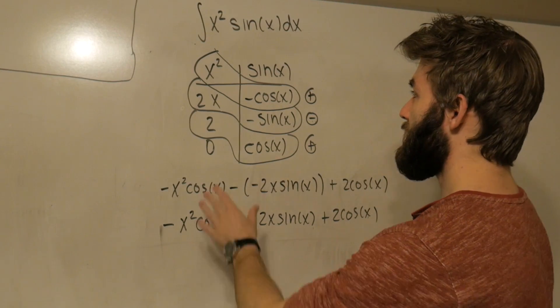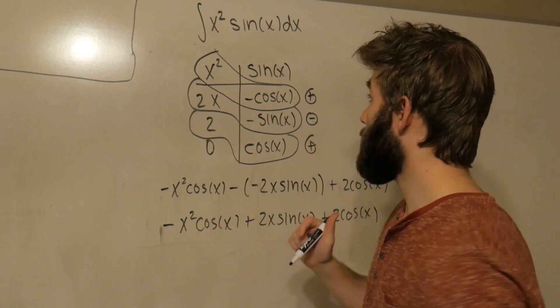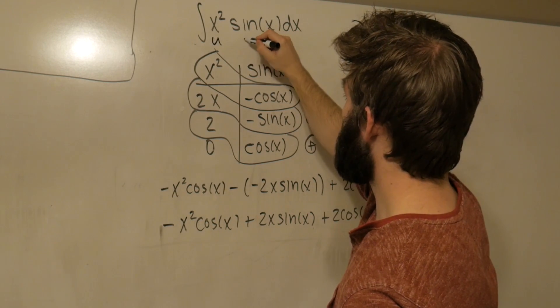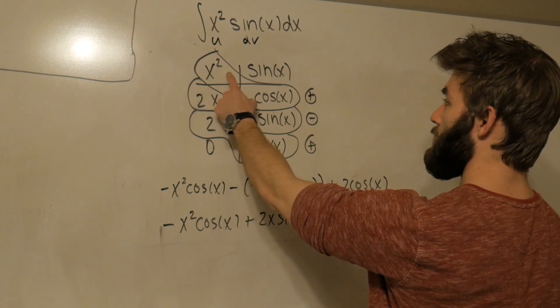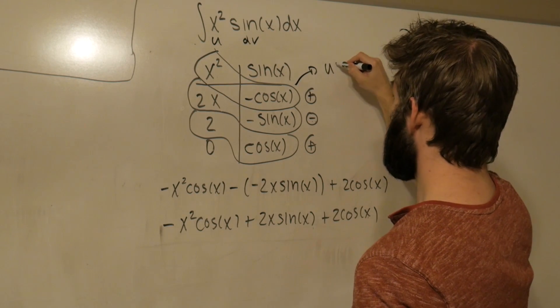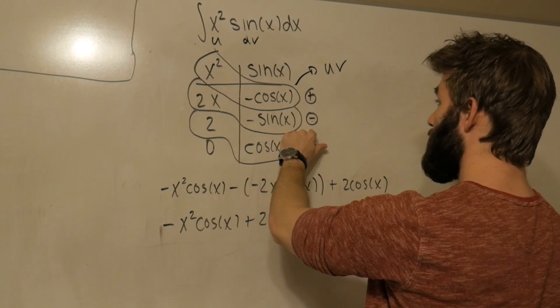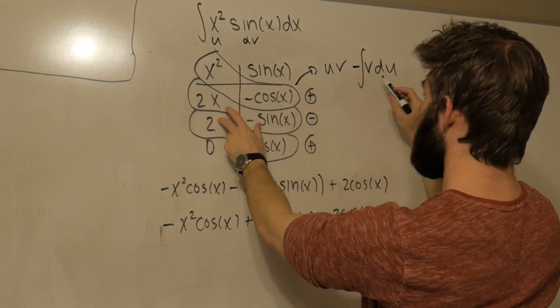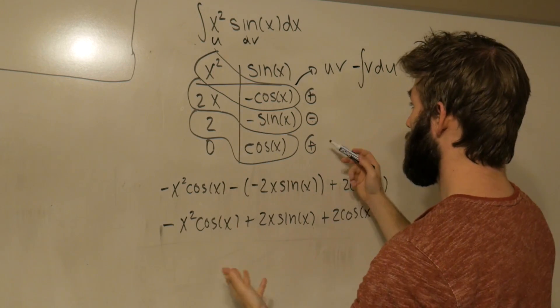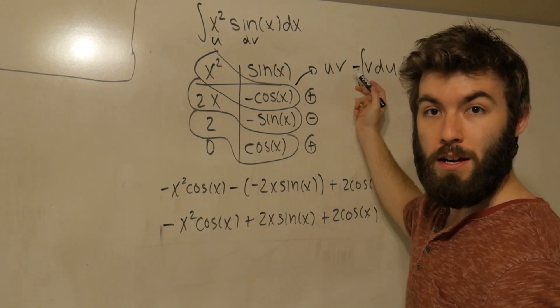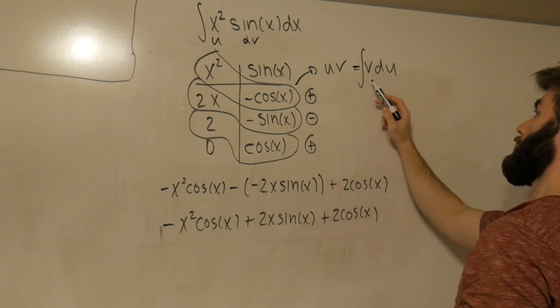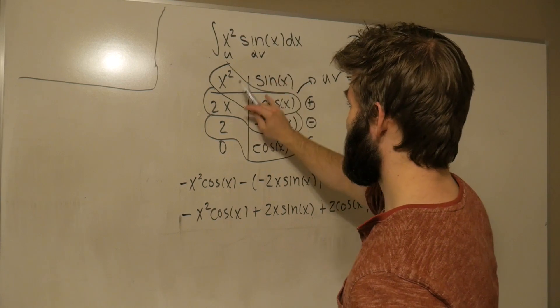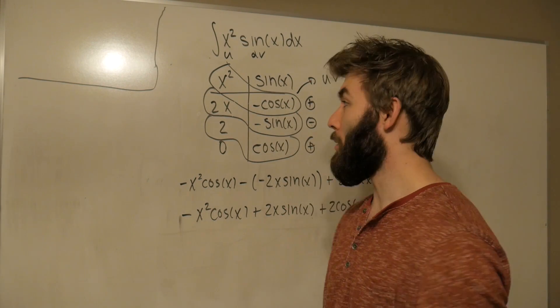And that's the same answer we got going through all the trouble of doing integration by parts twice. And the reason I said that this is just integration by parts sort of packaged a little bit differently is because this is our u and this is our dv. Which means that this is just uv - ∫v du or the integral of v du. And so on and so forth. So the minus cancels with the next iteration of integration by parts and gives us a plus. That's why it alternates signs every other sign.